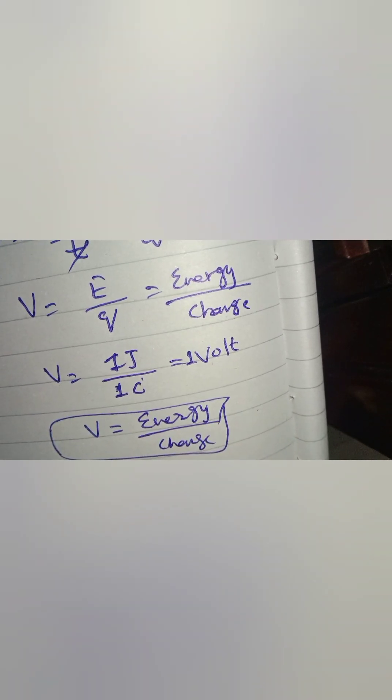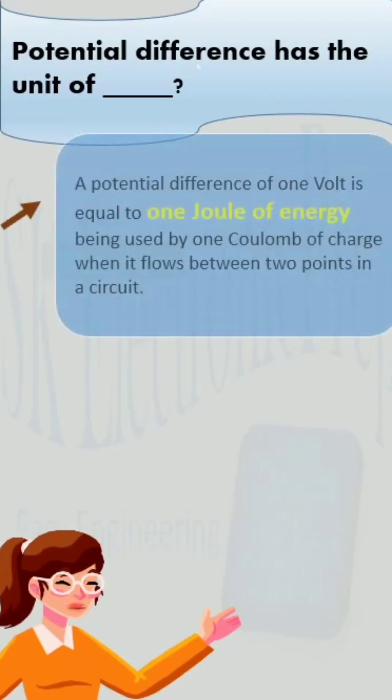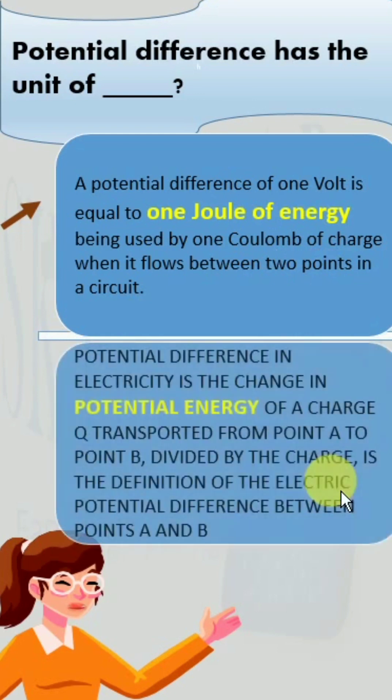Now let us discuss our result. We will compare two different definitions. The first says potential difference of one volt is equal to one joule of energy being used by one coulomb of charge when it flows between two points in a circuit.